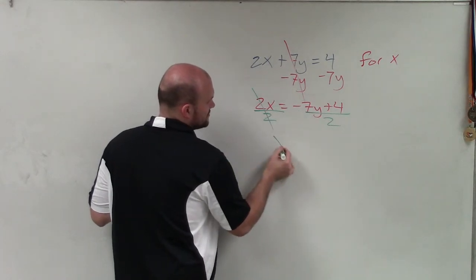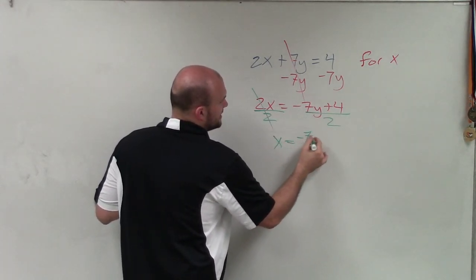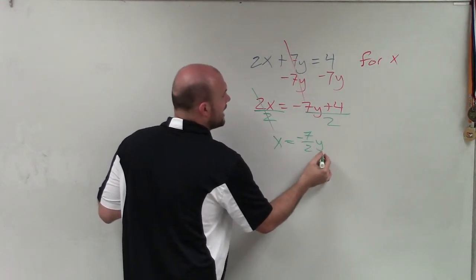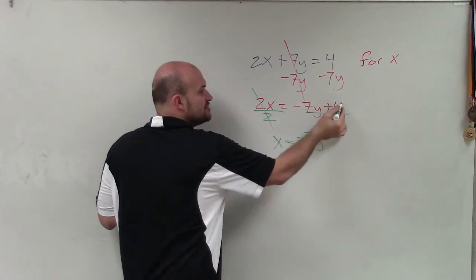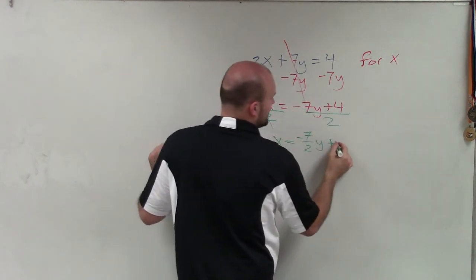So therefore, now I have 1 times x, which is just x, equals negative 7 halves y when you divide that. And then 2 evenly divides into 4, which would be a positive 2.